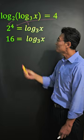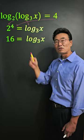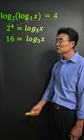2 to the 4th power is 16, and this time instead of changing this logarithmic equation to an exponential equation, let's take it to the base of 3 on the left and right side.